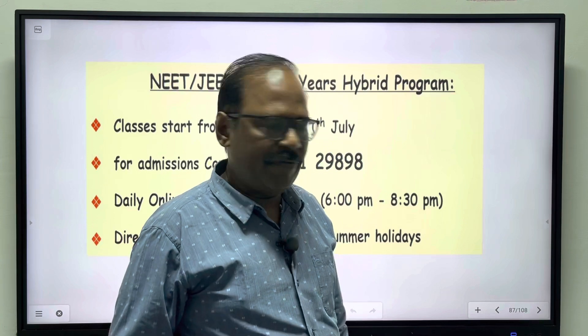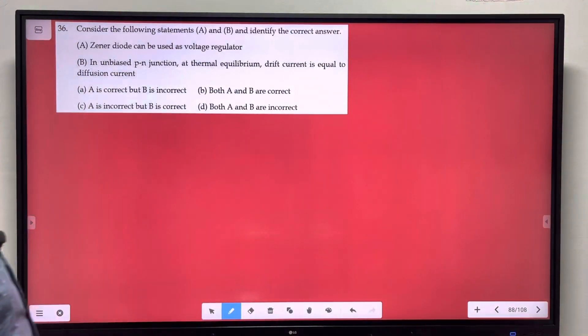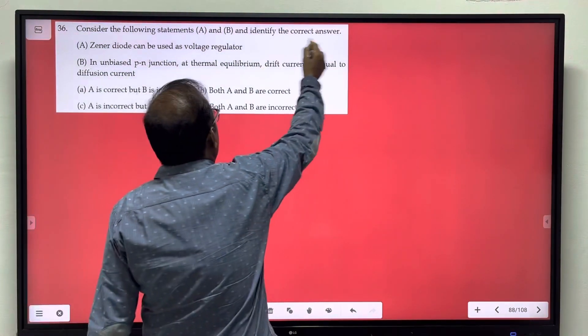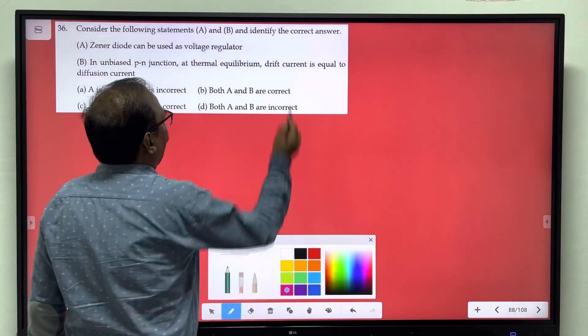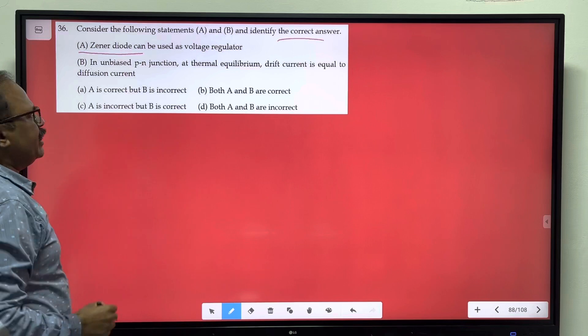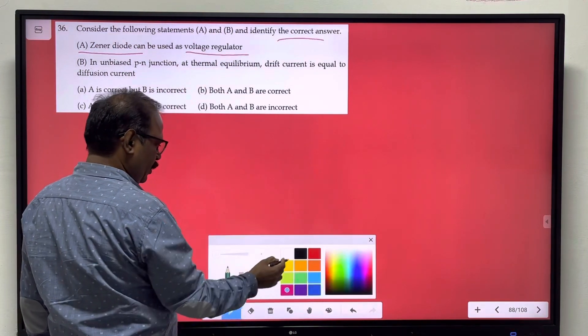So, consider the following statements and identify the correct answer. Statement A: Zener diode is used as a voltage regulator.